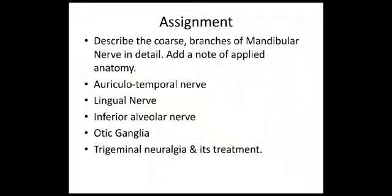For the assignment: describe the course and branches of the mandibular nerve in detail and add a note on its applied anatomy. Short essay topics include the auriculotemporal nerve, lingual nerve, inferior alveolar nerve, otic ganglion, and trigeminal neuralgia and its treatment.